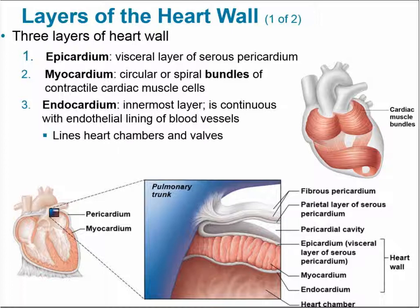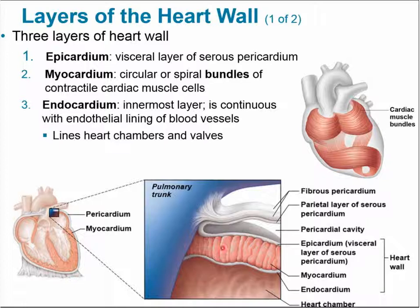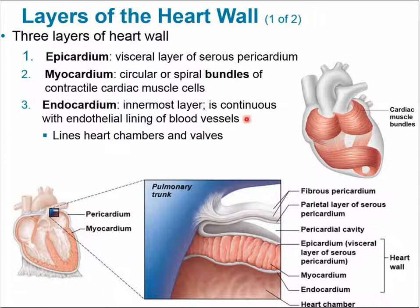There are three layers to the heart wall itself. The epicardium is the same as the visceral layer of the serous pericardium — it's the outermost covering of the heart. The myocardium is the muscular layer of the heart wall, containing cardiac muscle cells arranged in a spiral bundle fashion. The endocardium lines the internal chambers of the heart, making contact with the blood, and is continuous with the lining of the blood vessels.